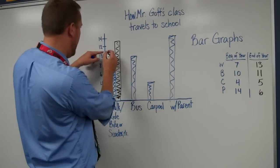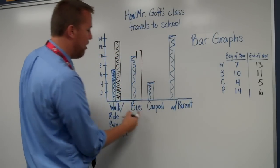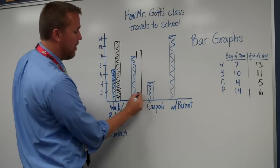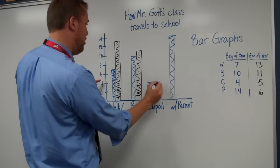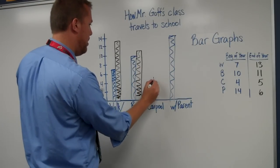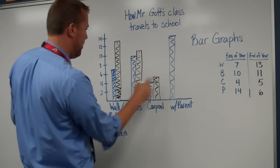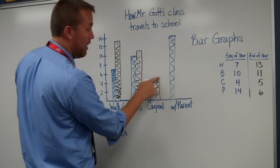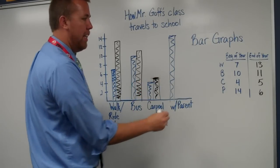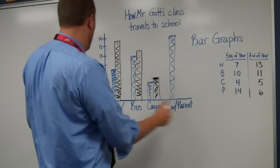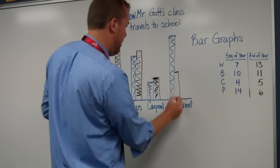Bus also went up to 11, and I just draw that right next to the other bar. Carpooling also went up just a little bit to 5. And then riding with parents went all the way down to 6, so I'd draw that bar.